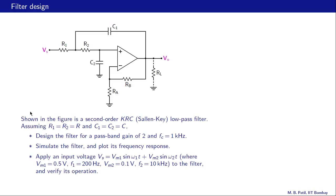Let us begin. Let us consider this filter problem shown in the figure. It is a second order KRC filter, also called Sallen-Key. This specific filter is a low pass filter, called KRC because it consists of RC components and a K or gain block.